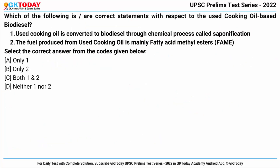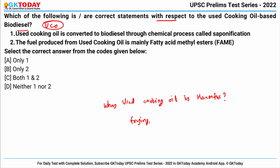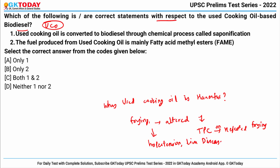Next question: which of the following are correct statements with respect to used cooking oil based biodiesel? First, let's understand why consumption of used cooking oil is harmful. During frying, several properties and toxicities of oil are altered and total polar compounds (TPC) are formed on repeated frying. The toxicity of these compounds is associated with diseases such as hypertension and liver disease.